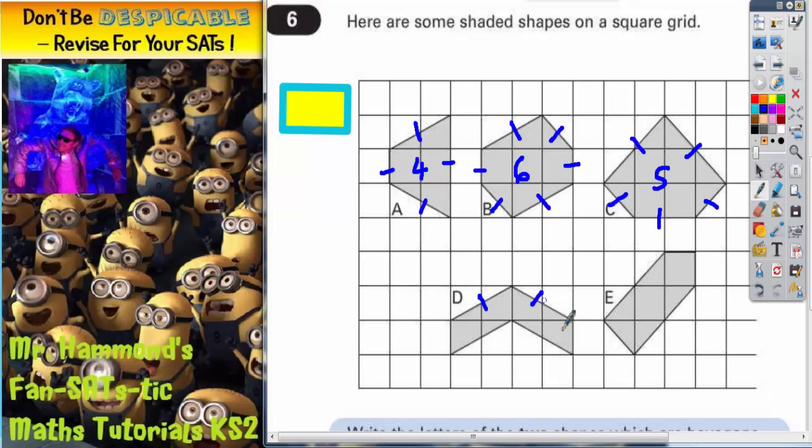Shape D has got one, two, three, four, five, six. Shape E has got one, two, three, four, five sides.